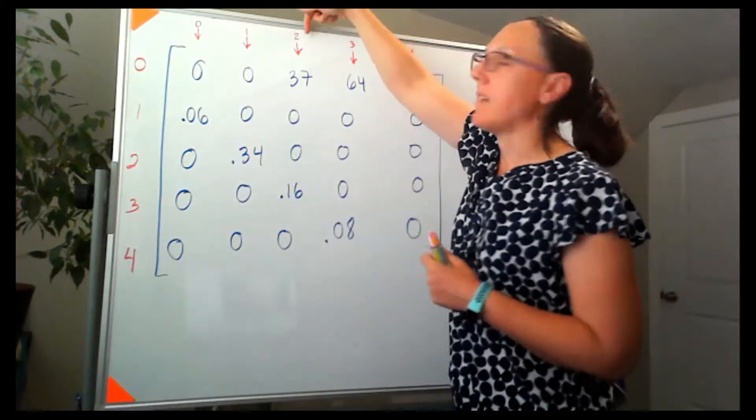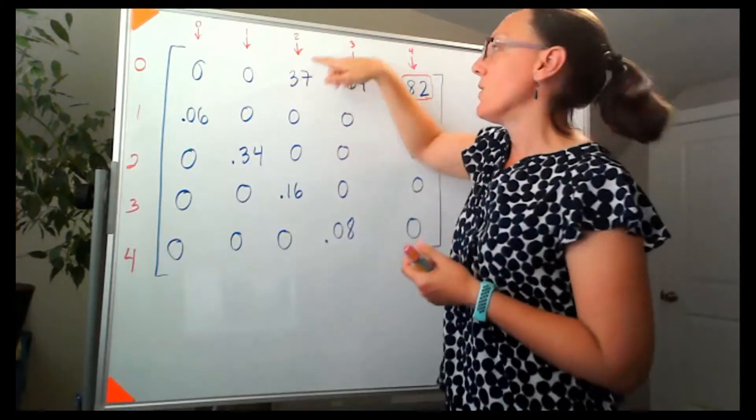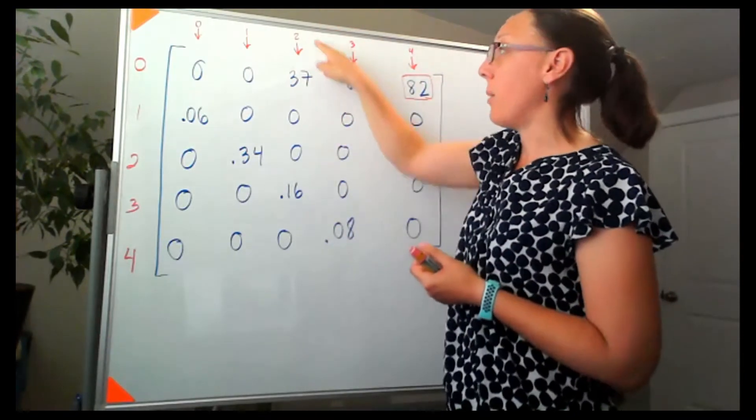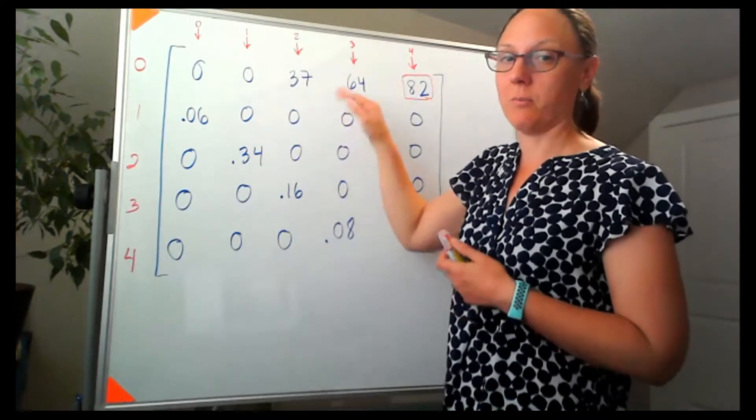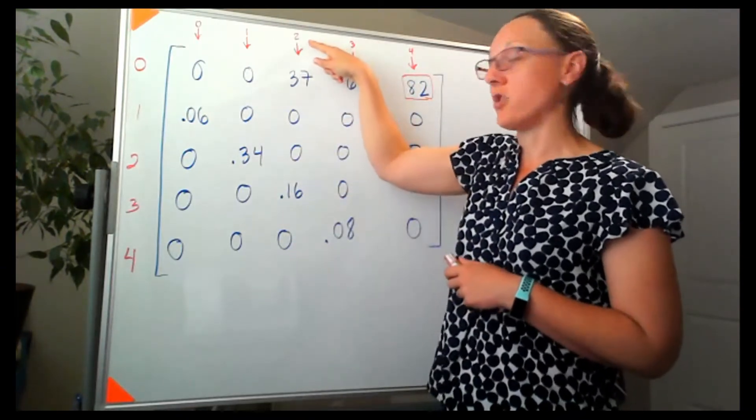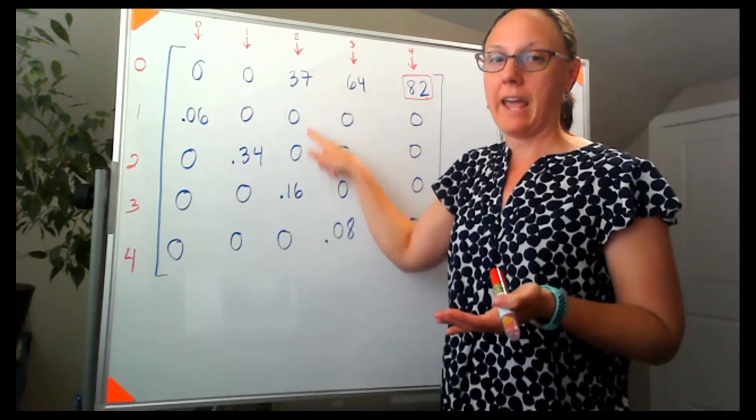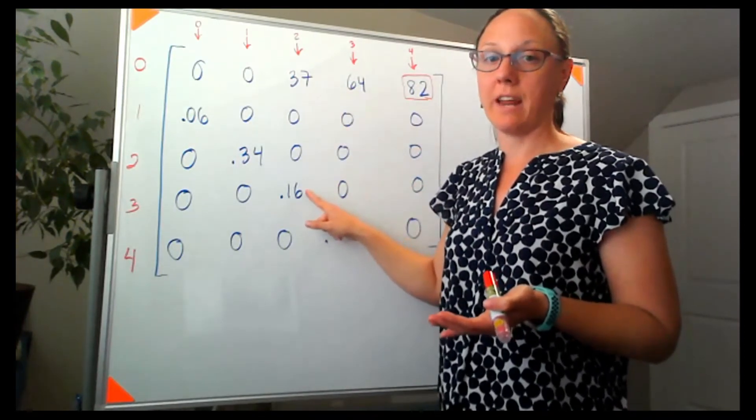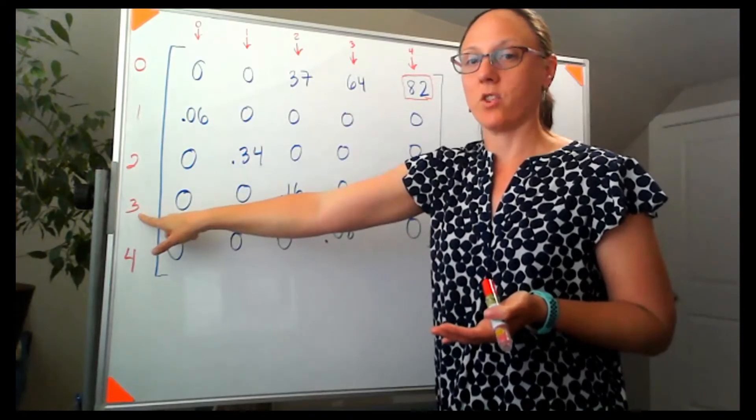So the column is telling me which age class it's coming from. So this column is coming from age class two individuals. So if I think about this column, it's saying each age class two individual has on average 37 female offspring, and 16% of them are going to survive to become age class three.